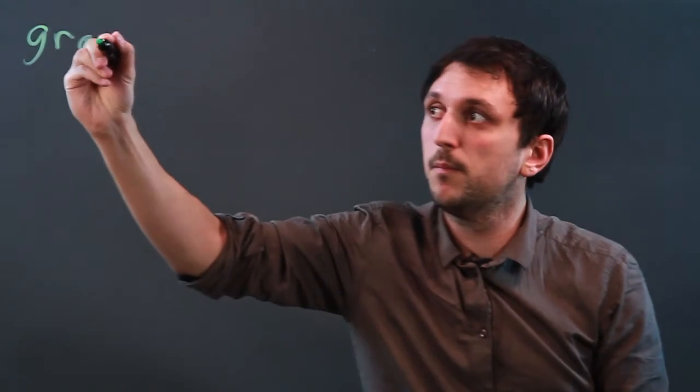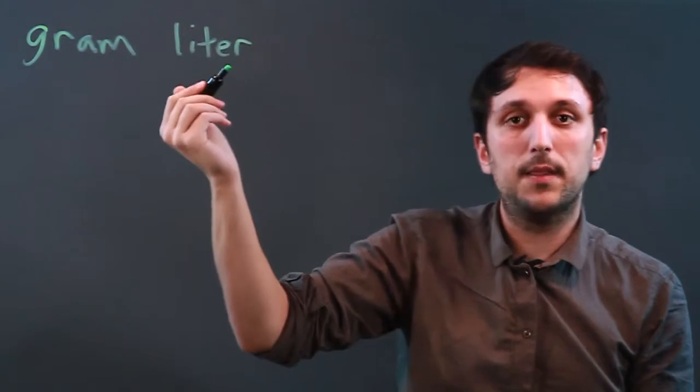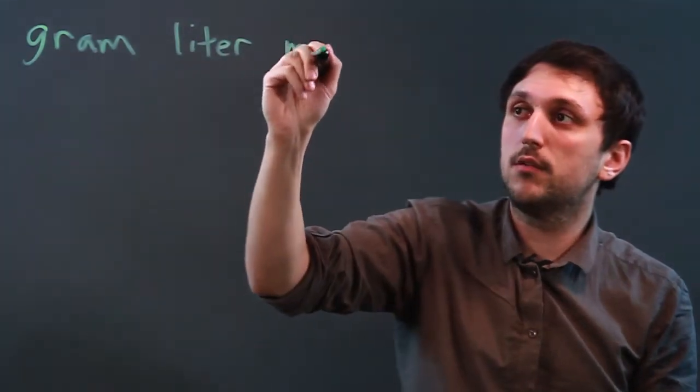So the basic unit of mass is the gram, and the basic unit of volume is the liter, and the basic unit of distance is the meter.